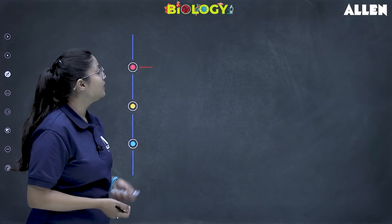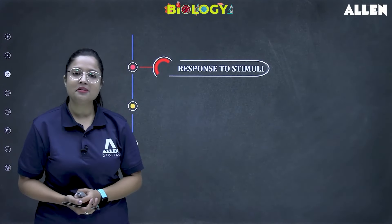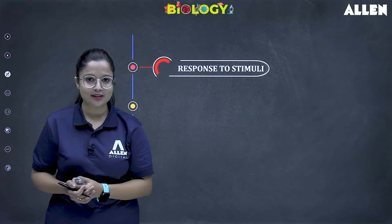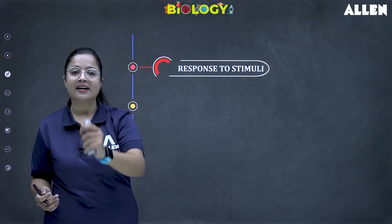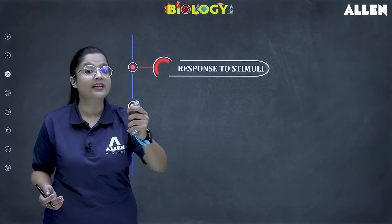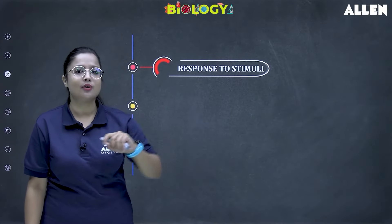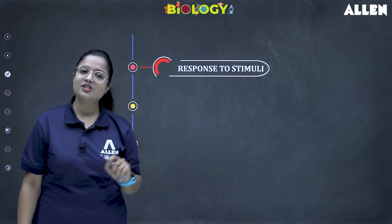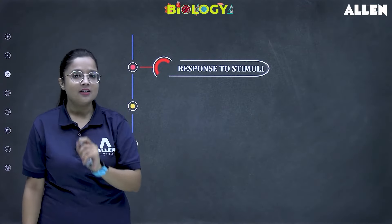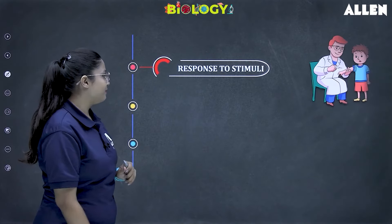Next characteristic is respond to stimuli. Similarly, the touch-me-not plant — when you touch it, it responds against the touch. This is a factor that clearly describes that it is a living thing. Any change happening around is called stimuli, and against that, plants, trees, and animals all respond.